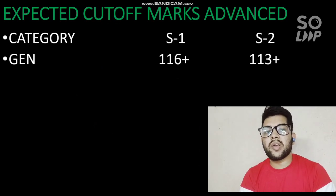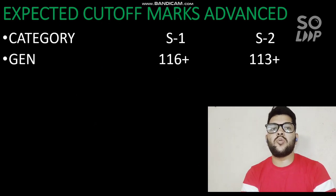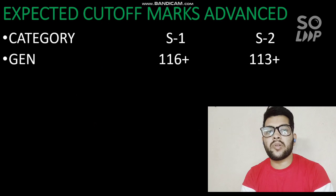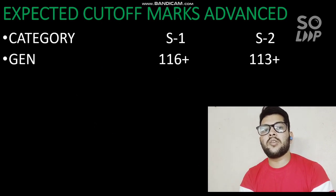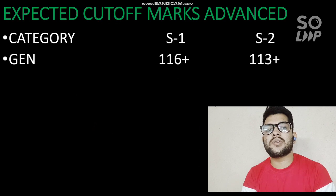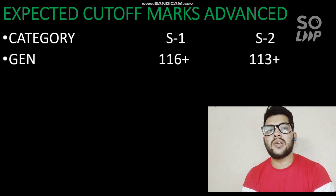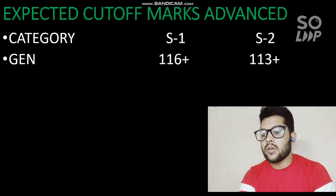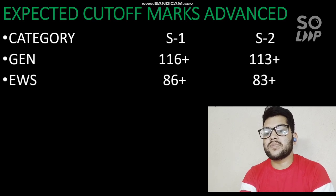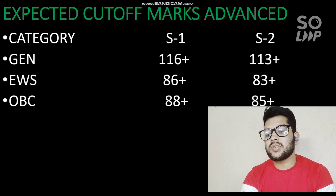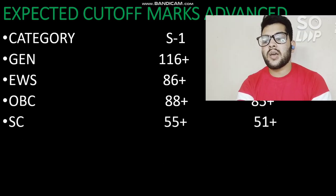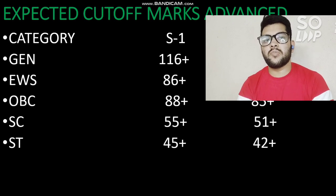A reminder: when I say Shift 1 is slightly easier and Shift 2 harder, it doesn't mean there is a large difference — it could also be vice versa, as this is based on student feedback. Your actual percentile will be based on your score in the official exam. For EWS: 86+ for Shift 1, 83+ for Shift 2. For OBC: 88+ for Shift 1, 85+ for Shift 2. For SC: 55+ and 51+. For ST: 45+ and 42+ for Shift 1 and Shift 2 respectively.